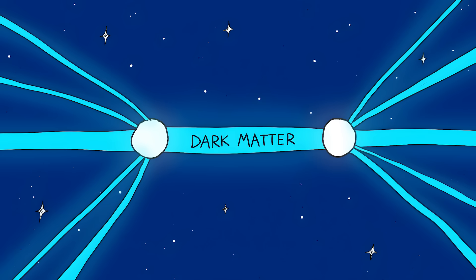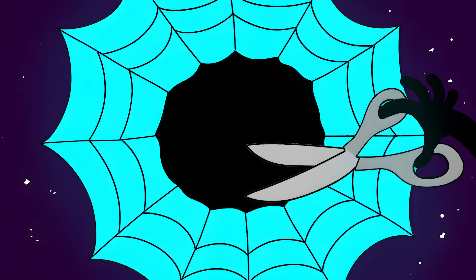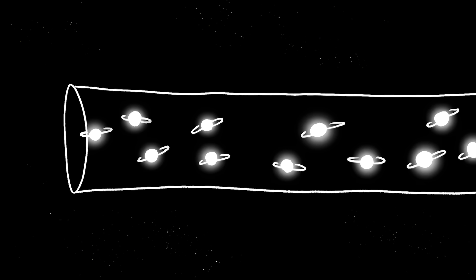But the Boötes Void is like someone took scissors and cut out a massive chunk of this web. The few galaxies that are in there form a tube-like structure, as if they were arranged that way on purpose. And the void is actually getting bigger.